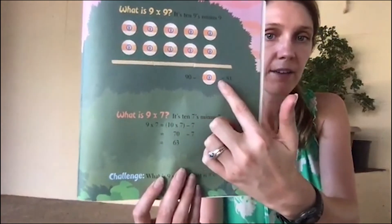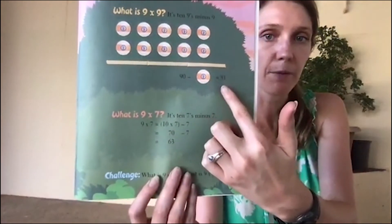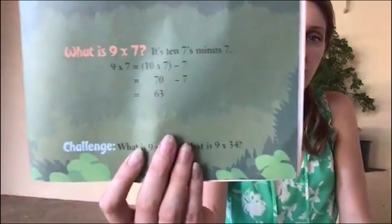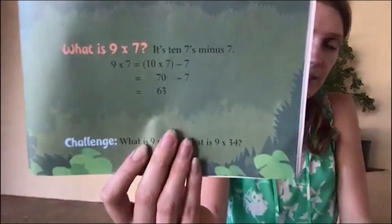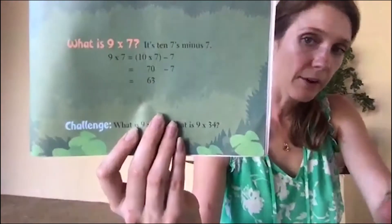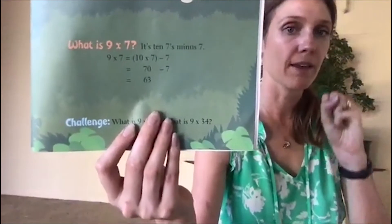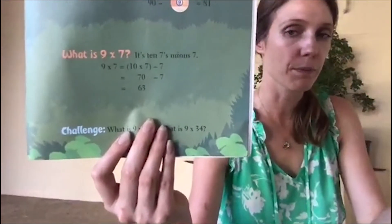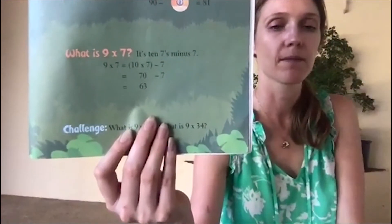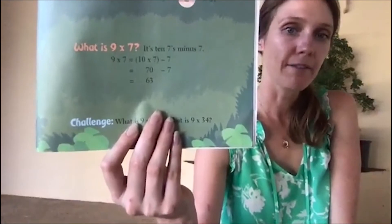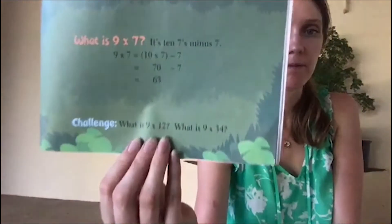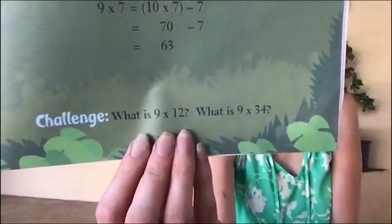What's 9 times 7? It's ten sevens — which is 70 — minus a seven. We gave it an extra group, pretending it's a 10, then take away one of those groups. So 9 times 7: 70 minus 7 equals 63. Try them with these other ones!